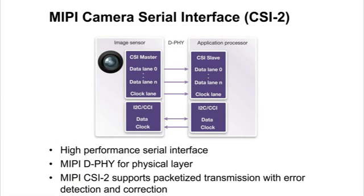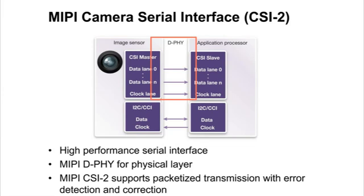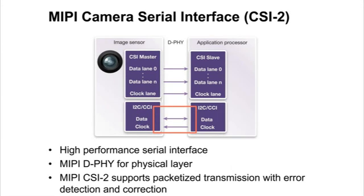The MIPI CSI-2 is an efficient low-power, low-pin count interface between an image sensor and an application processor or image signal processor, meeting the needs of multi-megapixel cameras. MIPI D-PHY provides a high-performance serial differential interface offering up to four data lanes with a total throughput of four gigabits per second plus a common differential clock lane. A separate I2C compliant interface is used for camera control functions.